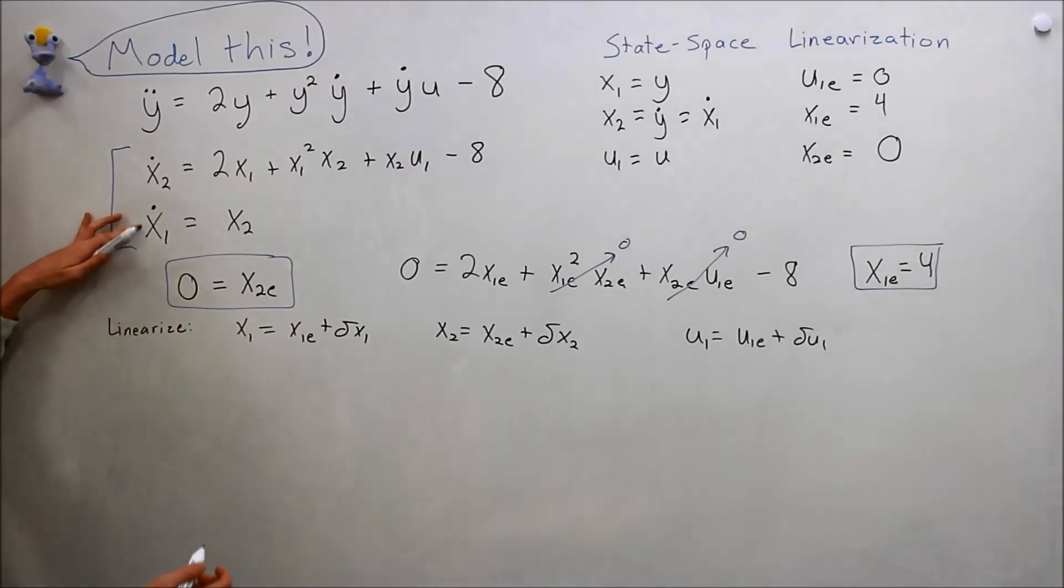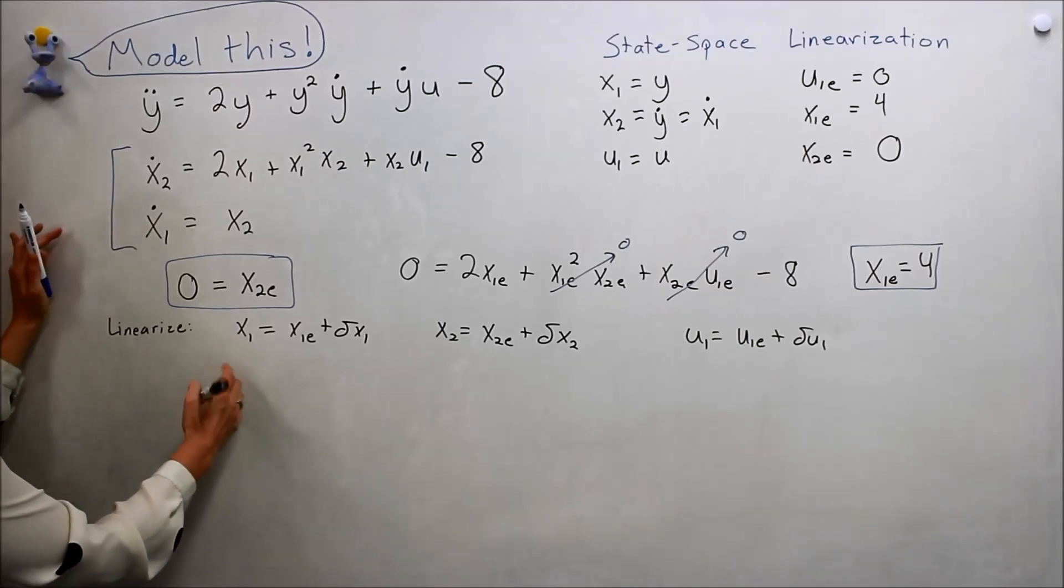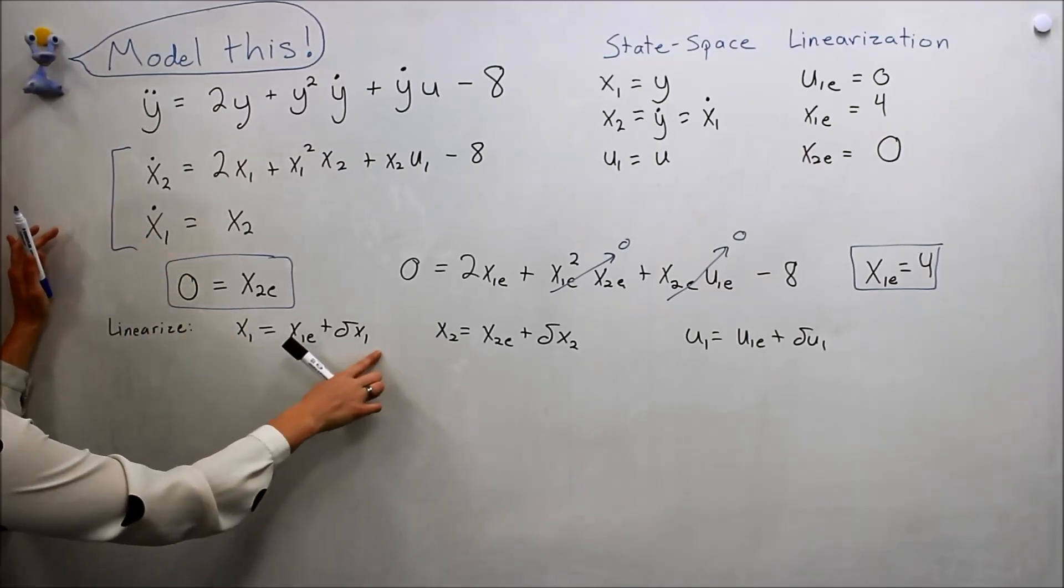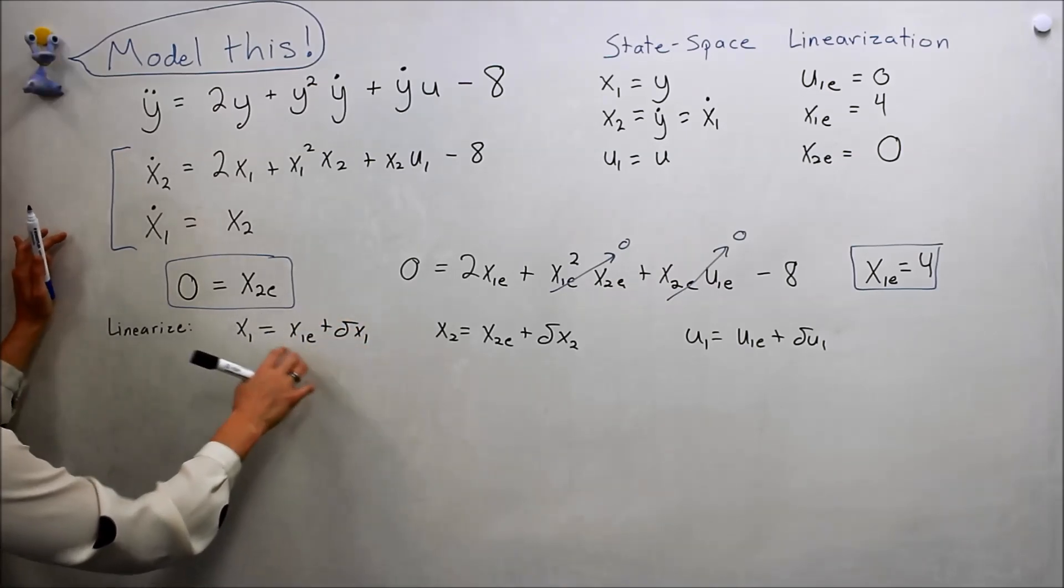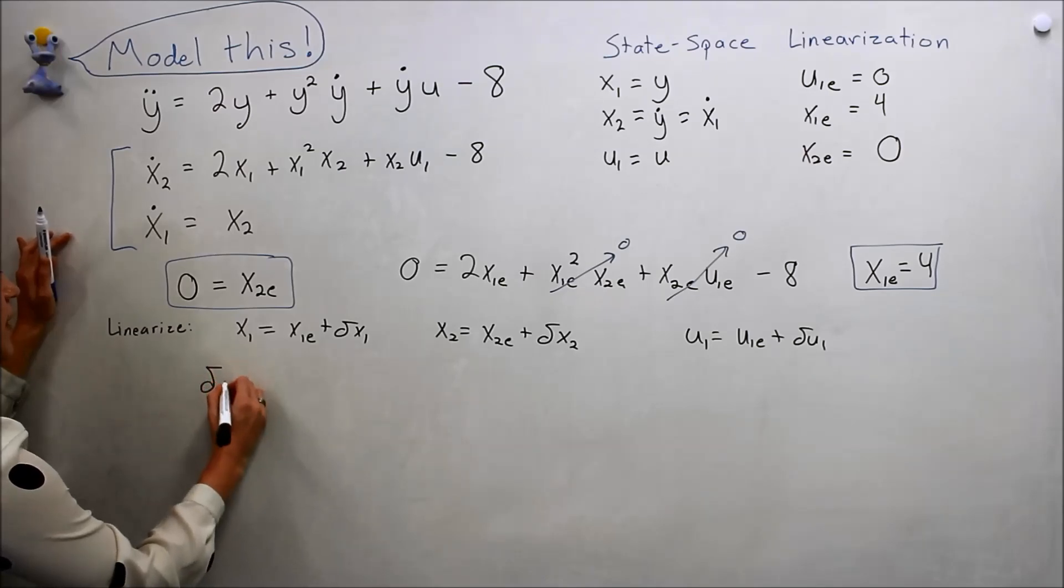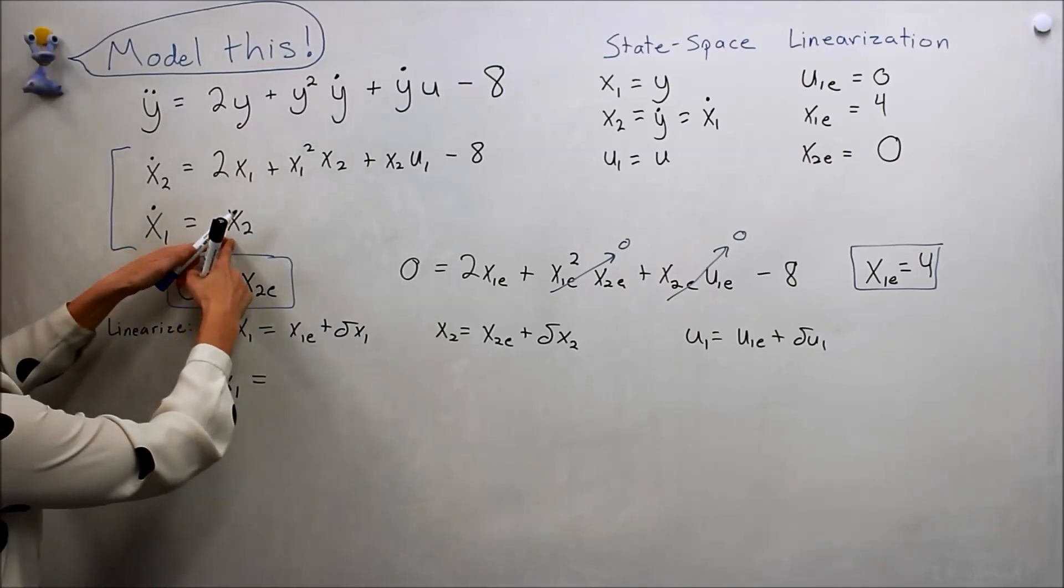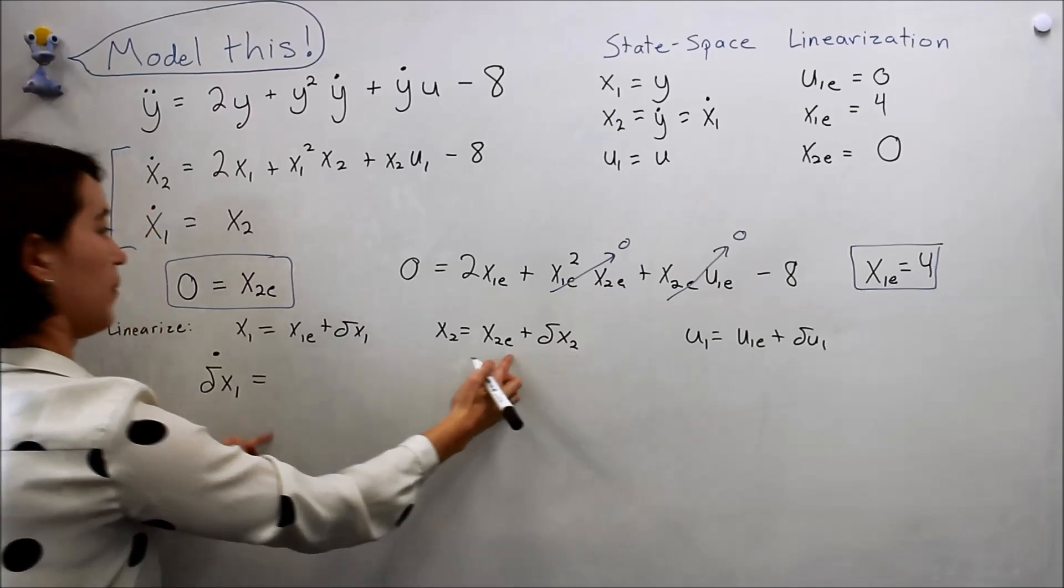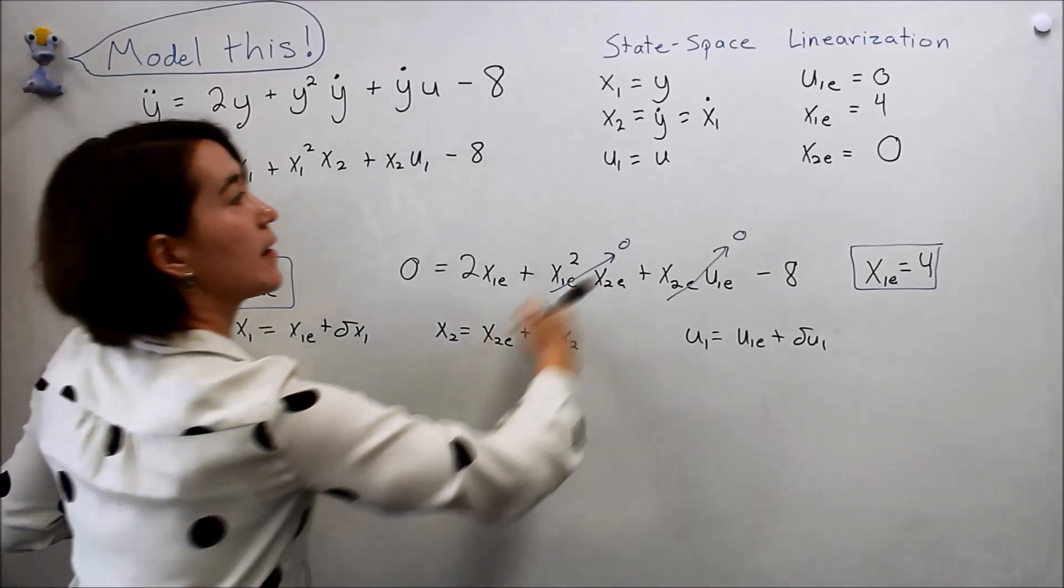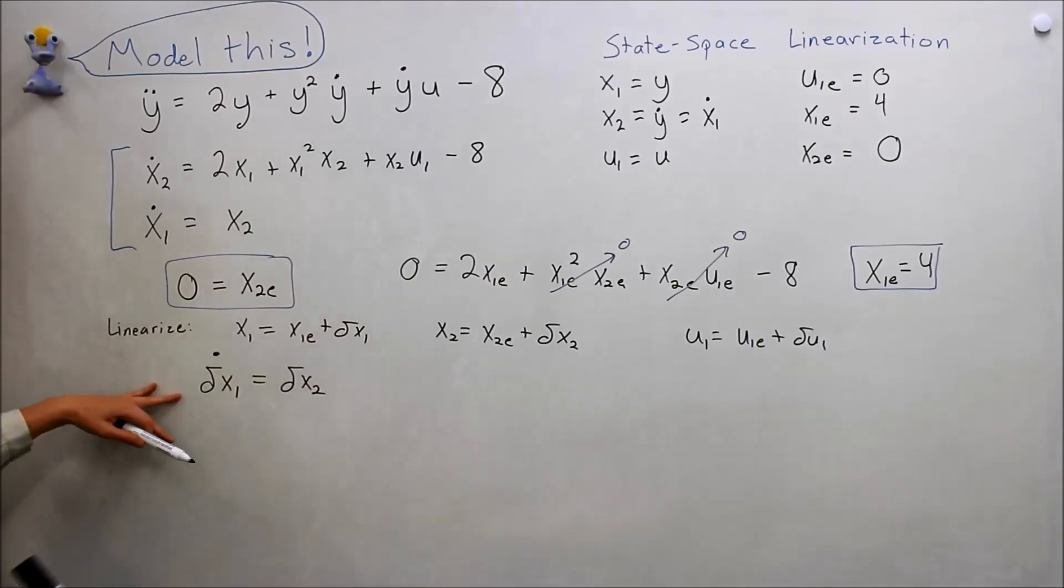Let's linearize each equation. We'll start with this one. If we do our derivative of this value, we are only left with delta x1 dot. This goes to zero. We'll just write that directly here: delta x1 dot. And then we have x2, we can plug that in, but we know x2e is zero, so we're left with just delta x2. This one linearized, done.